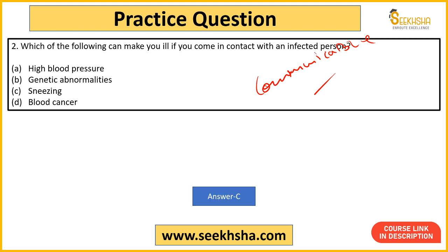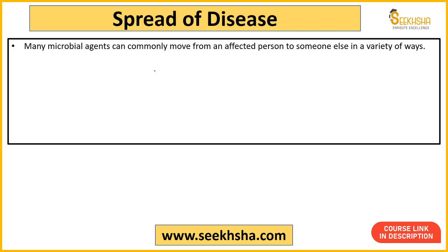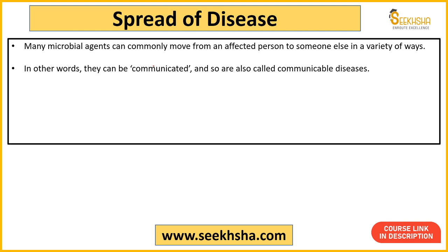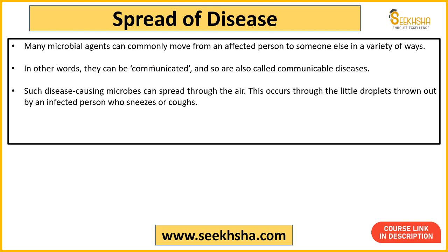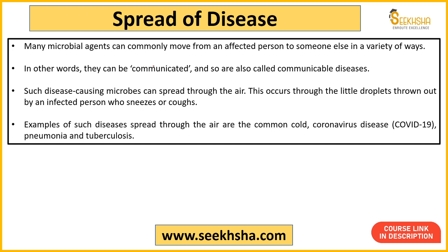Answer is option C - sneezing. Blood pressure kisi ka bhi ho toh aapka nahi hoga. Similarly genetic abnormality bhi communicate nahi hoti, aur blood cancer bhi kisi ko chhune se nahi hota. Sneezing hoti hai - agar koi aapke saamne chheek raha hai toh uski body ke nose aur mouth se microbial pores release hote hain, jo aapki body ke saath contact mein aate hain. Microbial agents ek person se doosre person tak body fluids ke through move karte hain.